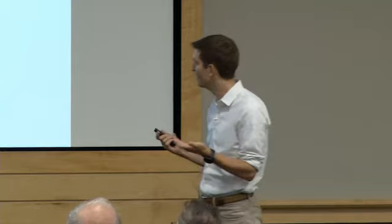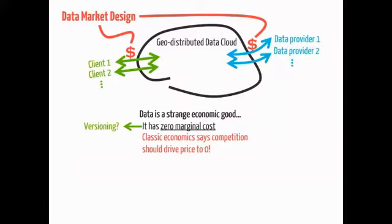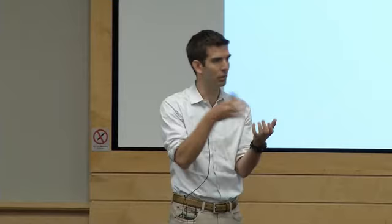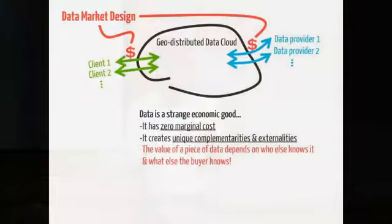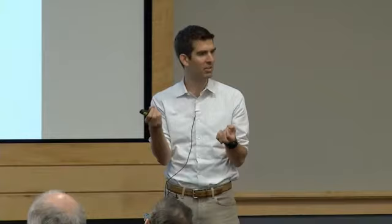The typical economics solution is versioning. Like selling movies — you can buy the SD version, stream it, own it, buy the HD version, or see it in the theater. Something similar could make sense for data. Another strange thing about data is complementarities and externalities: the value of a piece of data depends on what else the customer knows and who else knows it. A stock tip the whole world knows isn't valuable; one only you know could be very valuable. These externalities make it very hard to deal with data pricing.